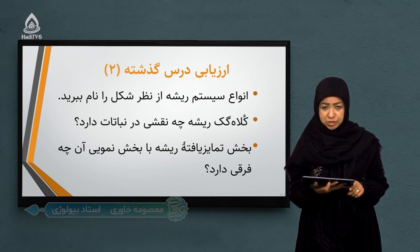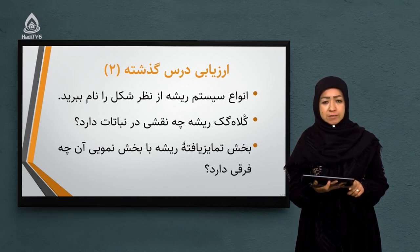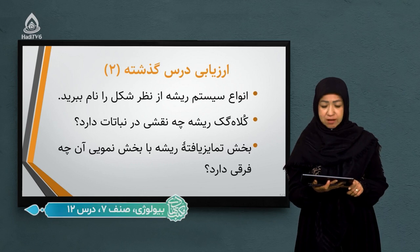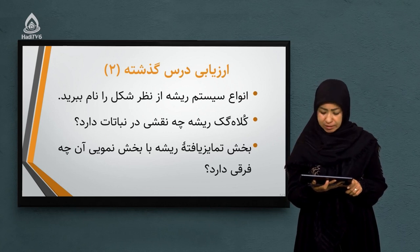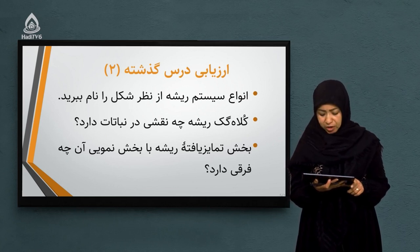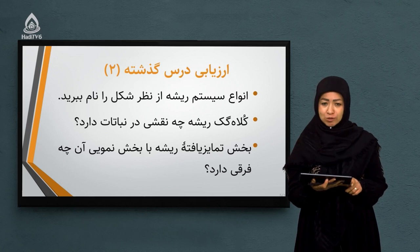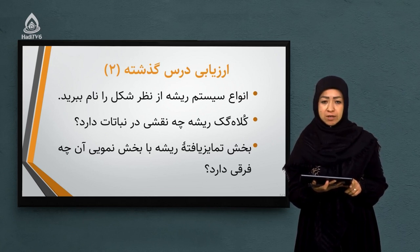سوال بعدی: کلاهک ریشه چه نقشی در نباتات دارد؟ کلاهک دو نقش خیلی مهم داشت. نقش اول، حفاظت از حجرات نمویی بود که بالاتر از کلاهک قرار داشت. نقش دیگر کلاهک این بود که در لابلای سنگ‌ها و ذرات خاک نفوذ میکرد و راه نفوذ ریشه را باز میکرد تا حجرات نمویی در حین برخورد به ذرات خاک و سنگ آسیب نبینند.